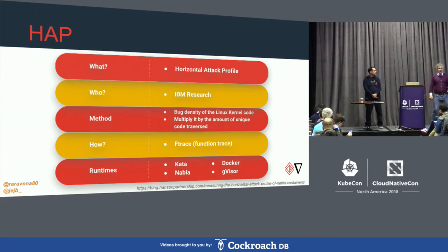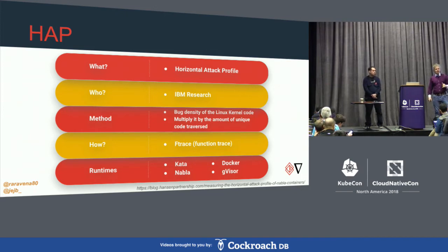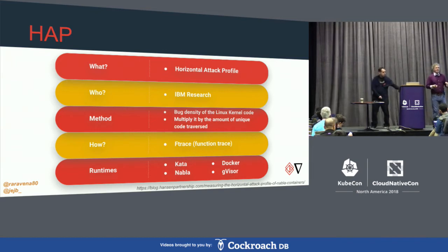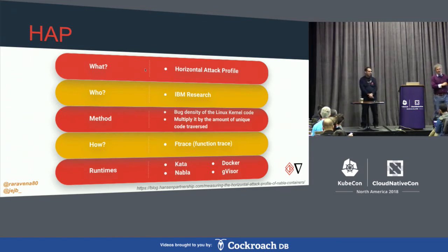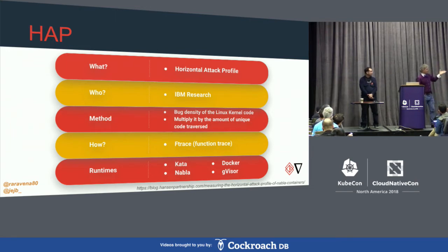We measure horizontal attack profile inside the Linux kernel using Ftrace, which traces everything through the kernel and counts how many functions are called, then multiply by bug density — assumed to be uniform for the horizontal piece. About 80% of Linux bugs are in drivers, but 80% of the Linux kernel is also drivers, so the assumption is roughly justified. The measurement works for any runtime: Nabla, Kata, Docker, GVisor — anything.